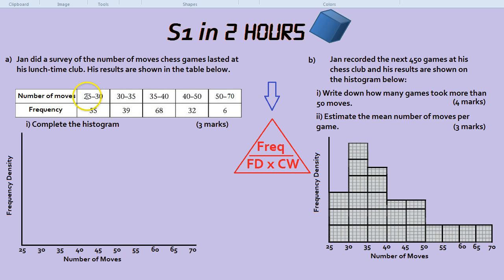So the class width, for example, of this group, 25 to 30, is 5. The class width of this group would be 10.